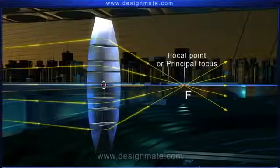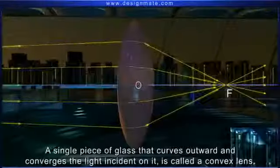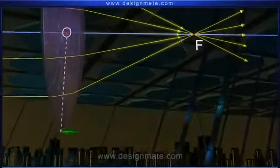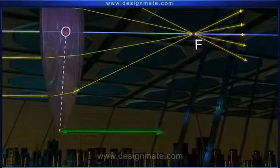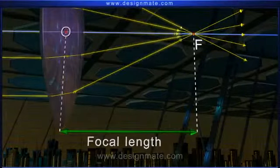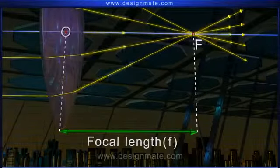It is usually denoted by F. The distance from the optical center to the focal point is called the focal length of the lens and is represented by f.